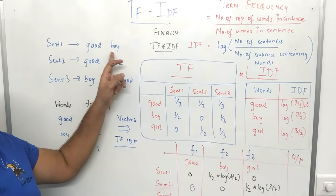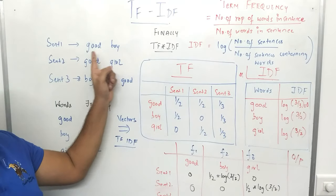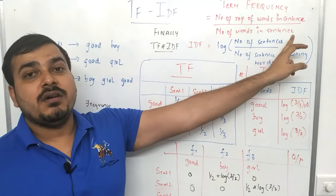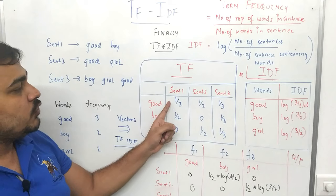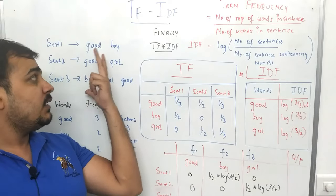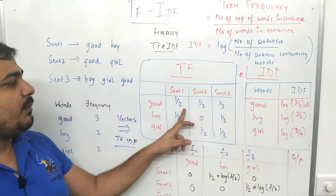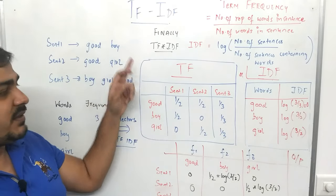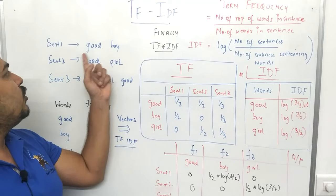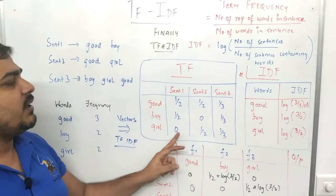In sentence one I have 'good boy'. If I want to find out term frequency of good: how many times is good present? Only one time, divided by total number of words in the sentence which is two — so term frequency of good is one by two. Similarly, boy is also present once out of two words, so term frequency of boy is also one by two. For girl, it is present zero times in sentence one, so this will become zero.